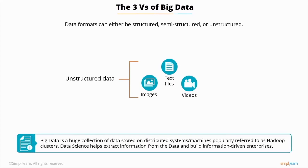In short, big data is a very large information database usually stored on distributed systems or machines, popularly referred to as Hadoop clusters. To be able to use this database, we have to find a way to extract the right information and data patterns from it — that's where data science comes in. Data science helps to build information-driven enterprises.